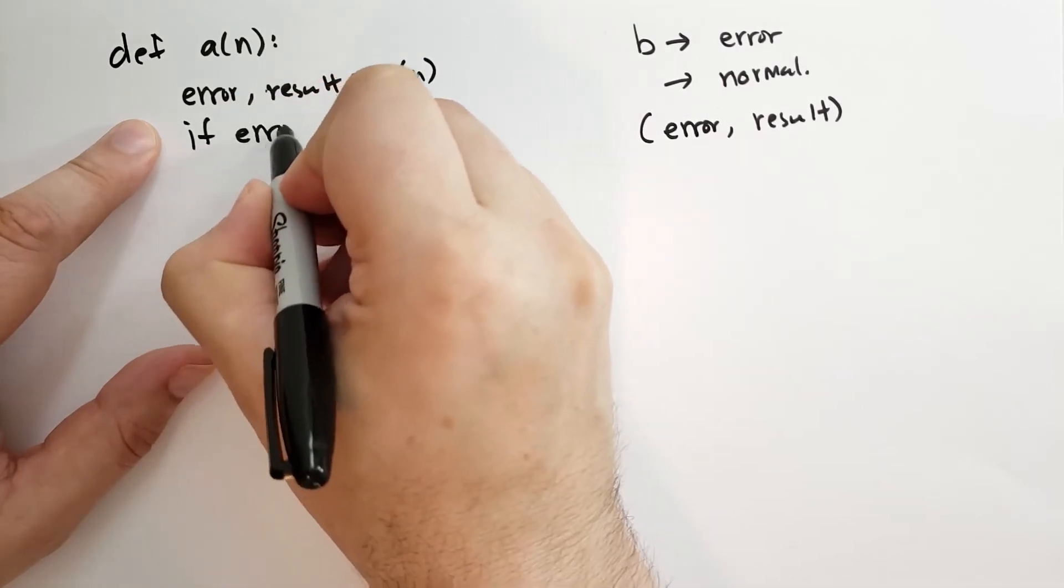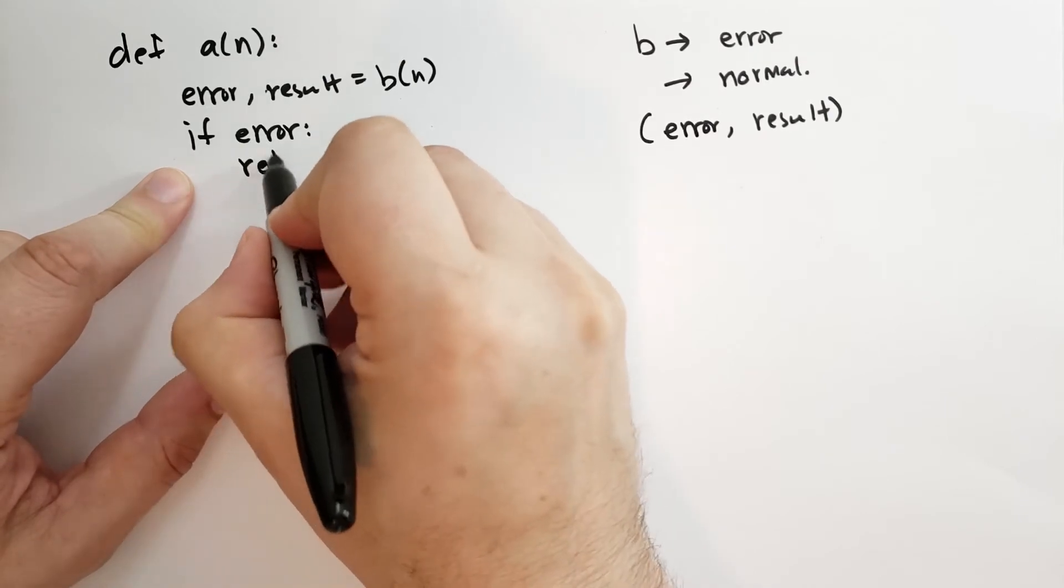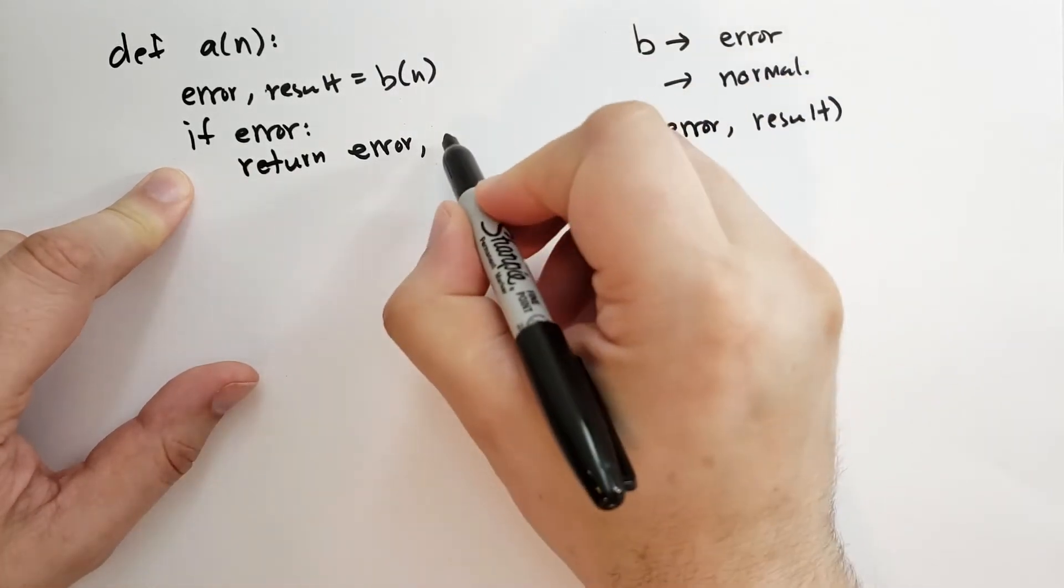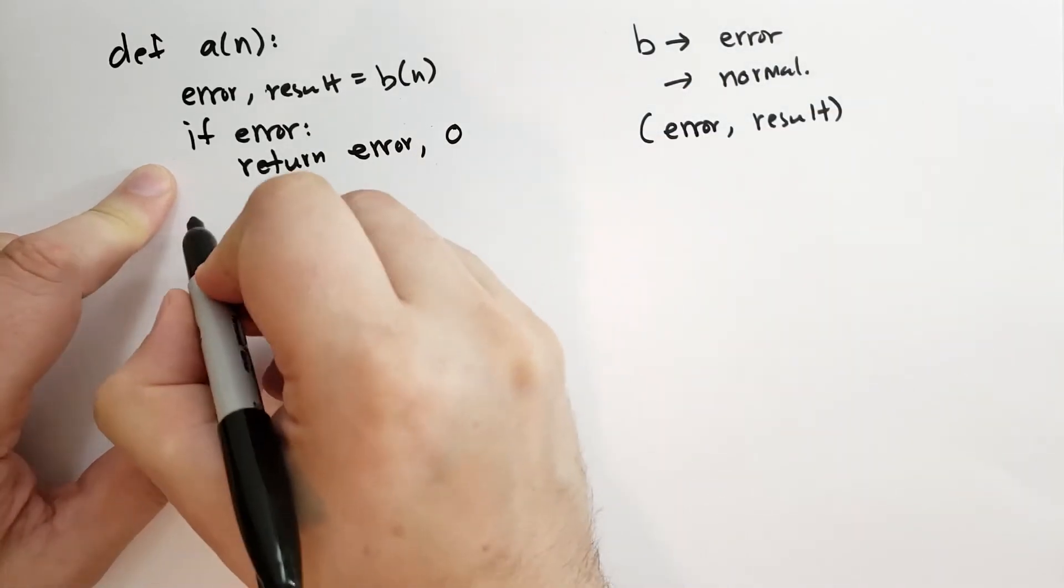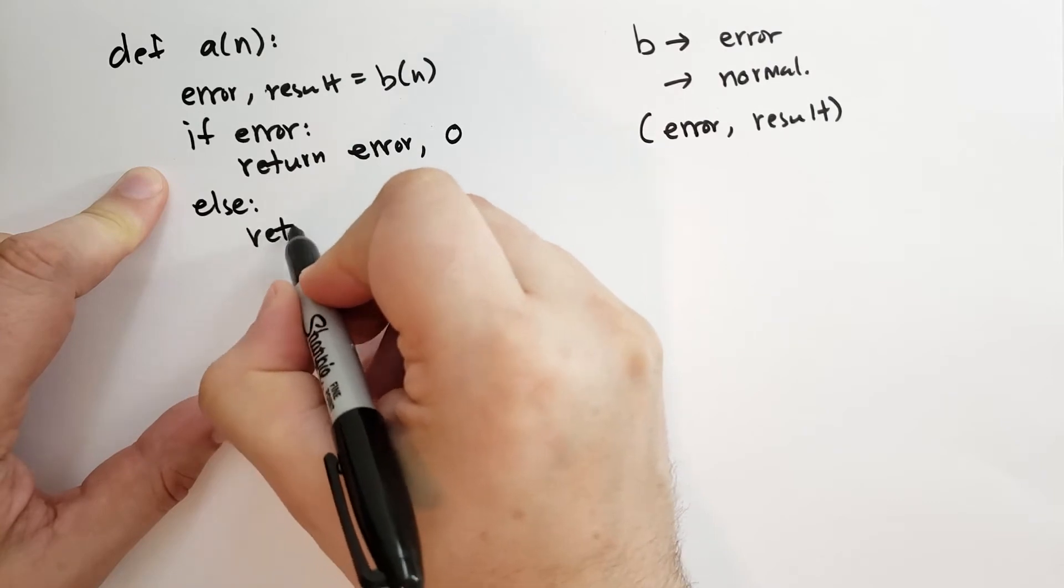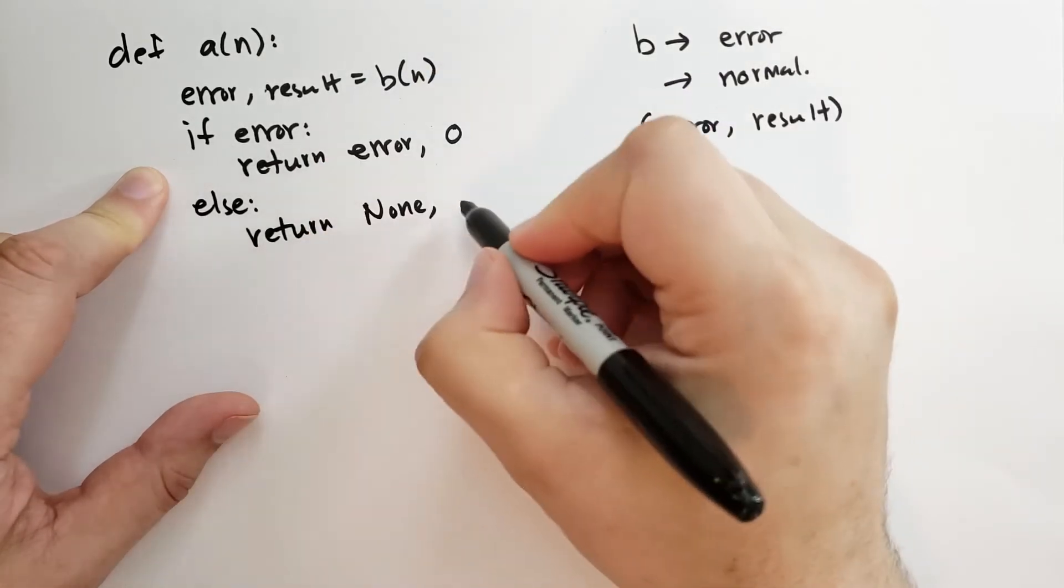Now we need to check to see if there's an error. If there's an error, a doesn't do anything with that error. It just passes it up the chain. Return the error and some dummy result value. Let's say zero. Otherwise, if there's no error, we'll just return none and whatever that result is.